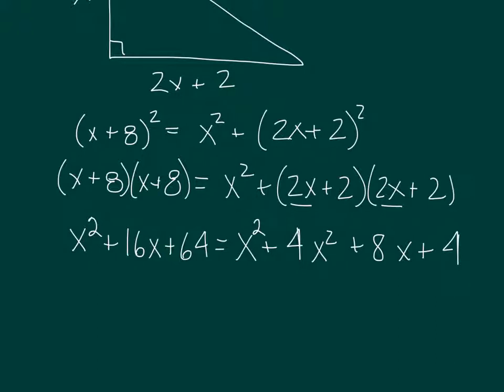So let's just clean this up a little bit. We have x squared plus 16x plus 64 is equal to, and on the right-hand side, we have 5x squared